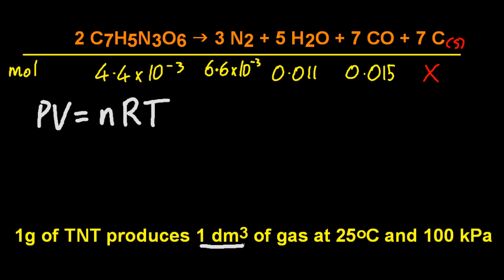All righty. So again, assuming it's an ideal gas, PV equals NRT. I want to check the volume. So it's going to be volume is NRT over P.